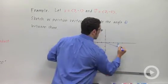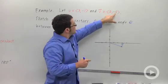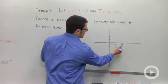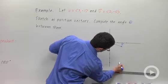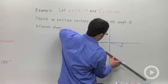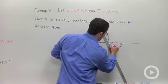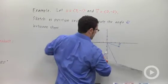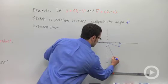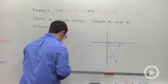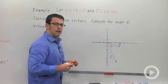So that's its position vector. I'll label it u. And then v goes from the origin to (2, -5), so something like this point here. Now sketching these beforehand gives us some idea of what to expect for the angle between them. This is v. The angle between them looks like it's going to be acute, so that's good to know ahead of time.